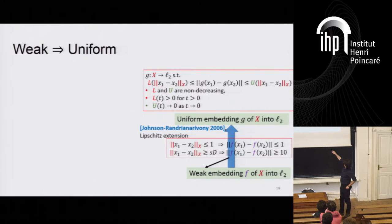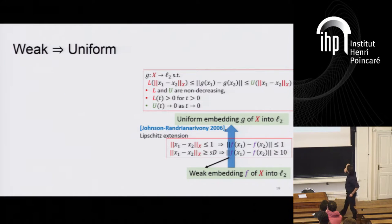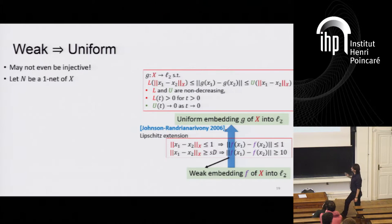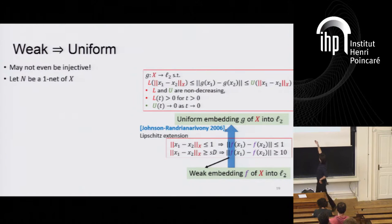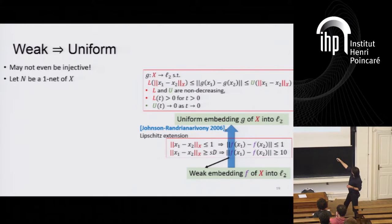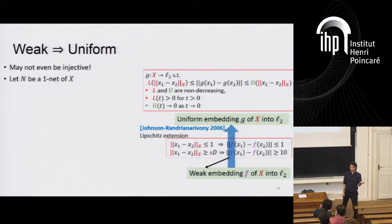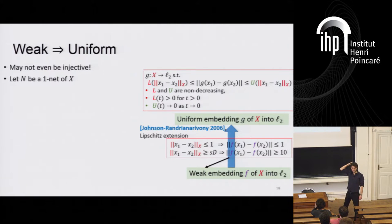The next step is to go from weak embedding to uniform embedding. A weak embedding is basically a one-scale embedding, while uniform embedding is a poor man's embedding but for all scales. The problem is you have to handle all scales somehow. Also, this does not even guarantee that the function is injective — it could be that some points X and Y which are different and have some non-zero distance are mapped to the same point. So you need to modify this purple embedding F.